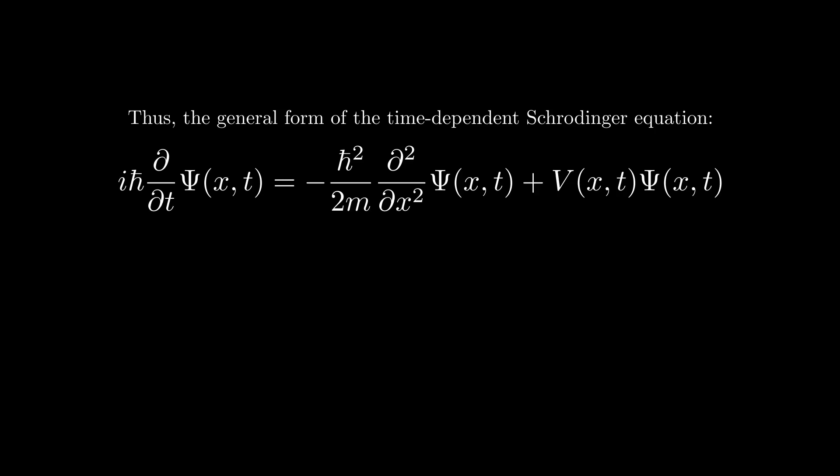The general form of the solution of the time dependent Schrödinger equation is given as the product of this complex time dependence and a spatial function. The spatial function lowercase ψ(x) is determined by the potential.